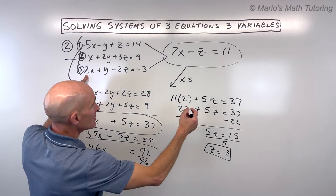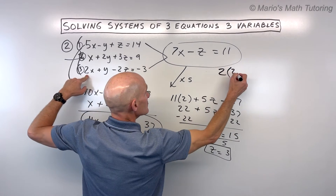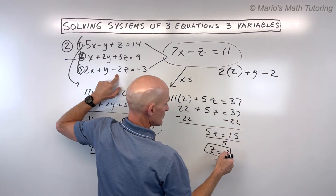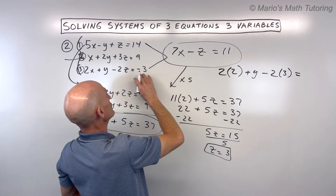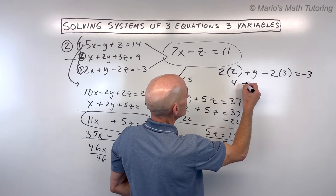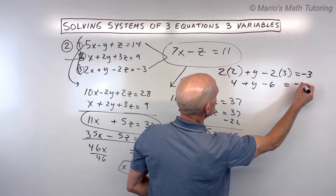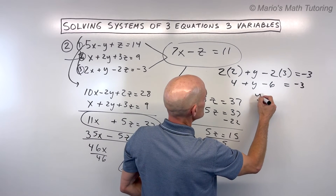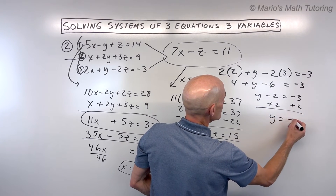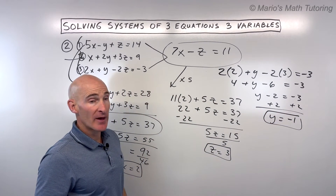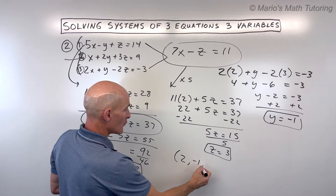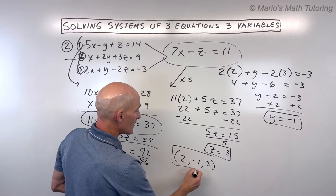Now we have x and z and need to solve for y, so we go back to the three-variable equations. I'd probably pick the third equation because it has a coefficient of 1 in front of y. Plugging in: 2 times x (which is 2), plus y, minus 2z (z is 3), equals negative 3. Simplifying: 4 plus y minus 6 equals negative 3, so negative 2 plus y equals negative 3. Adding 2 to both sides gives y equals negative 1. Writing in alphabetical order: x equals 2, y equals negative 1, z equals 3.